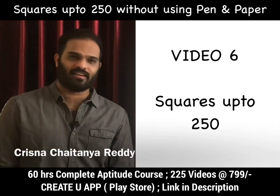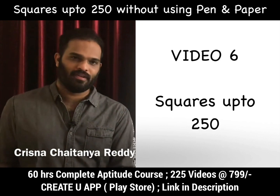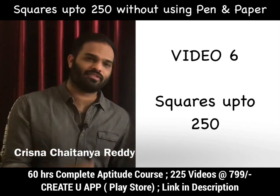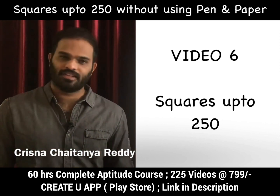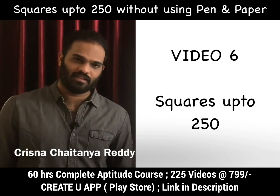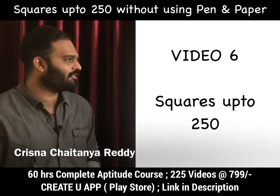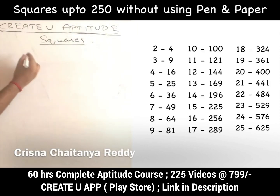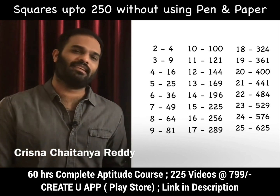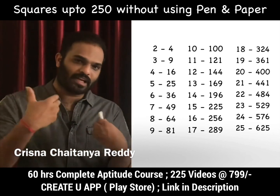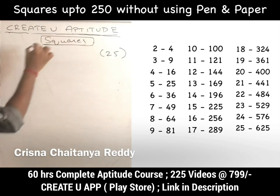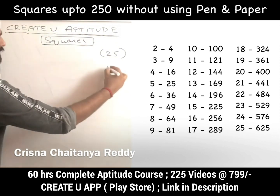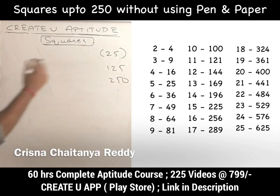Let us discuss squares because every formula has squares, so if you have to eliminate formulas in aptitude, squares are very important. You have to know squares till 125 for sure; if possible, learn till 250 — that will be mind-blowing. I'll explain a couple of methods; whichever you feel comfortable with, you can apply. The first thing is you have to learn squares till 25 by heart, and be very quick. Let me now explain squares till 125 — there is one method for till 125 and another for till 250.